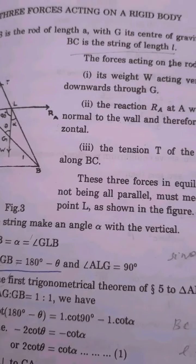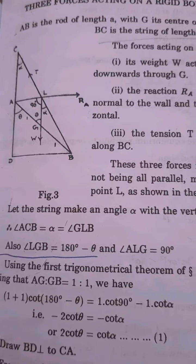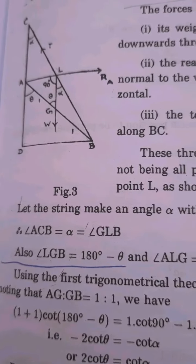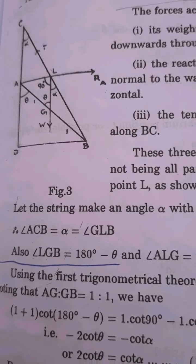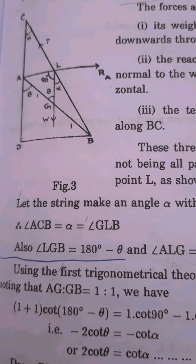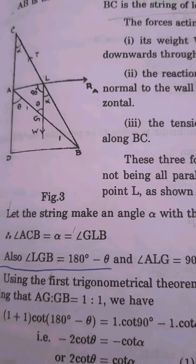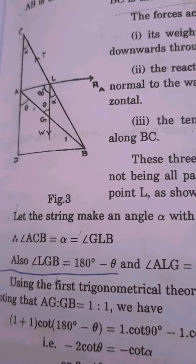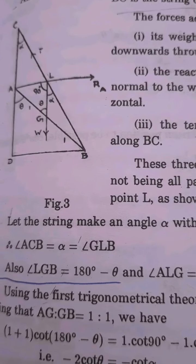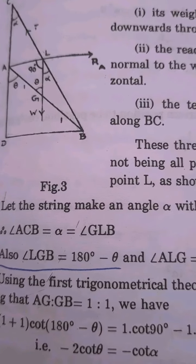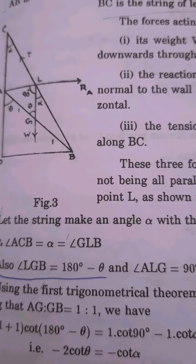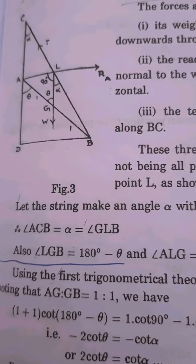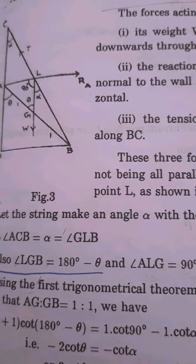A uniform rod of length A hangs at a smooth vertical wall. So AB is a rod of length A, and CD is a smooth vertical wall. It is being supported by means of a string of length L. BC is a string of length L, tied to one end of the rod at point B. The rod is in equilibrium.